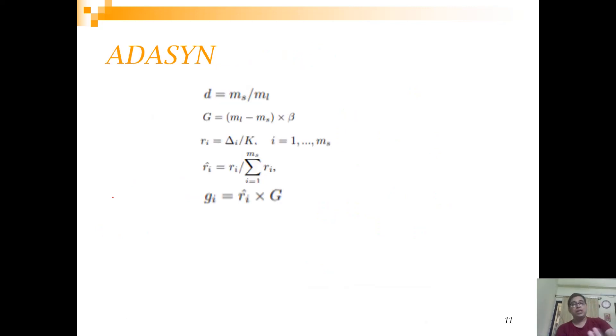This problem is solved by another algorithm called ADASYN. ADASYN has some equations. Let me explain you that very quickly. First you calculate the ratio of your minority class and majority class. Let's say this majority class is 100 and minority class is 10. So this d is actually 0.1. Then what you are going to do is you are going to look at how many data you are going to generate. So your m_l is 100 and m_s is 10. So this is 90. If you put a beta value of 1, then what will happen? You are going to create 90 synthetic observations which will make the two classes in balance.